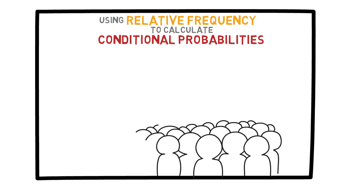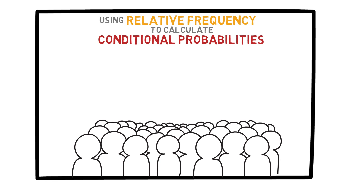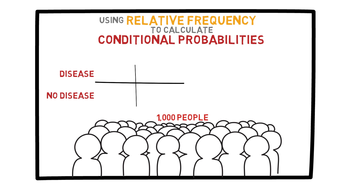So let's look at an example. Suppose we have a population of 1000 people and we are considering a certain disease or condition within this population. This table breaks down these 1000 people by whether they have the disease or not and whether they are a man or a woman. For example, there are 200 men who have the disease and 300 men who do not. Meanwhile, 100 women have the disease and 400 do not.